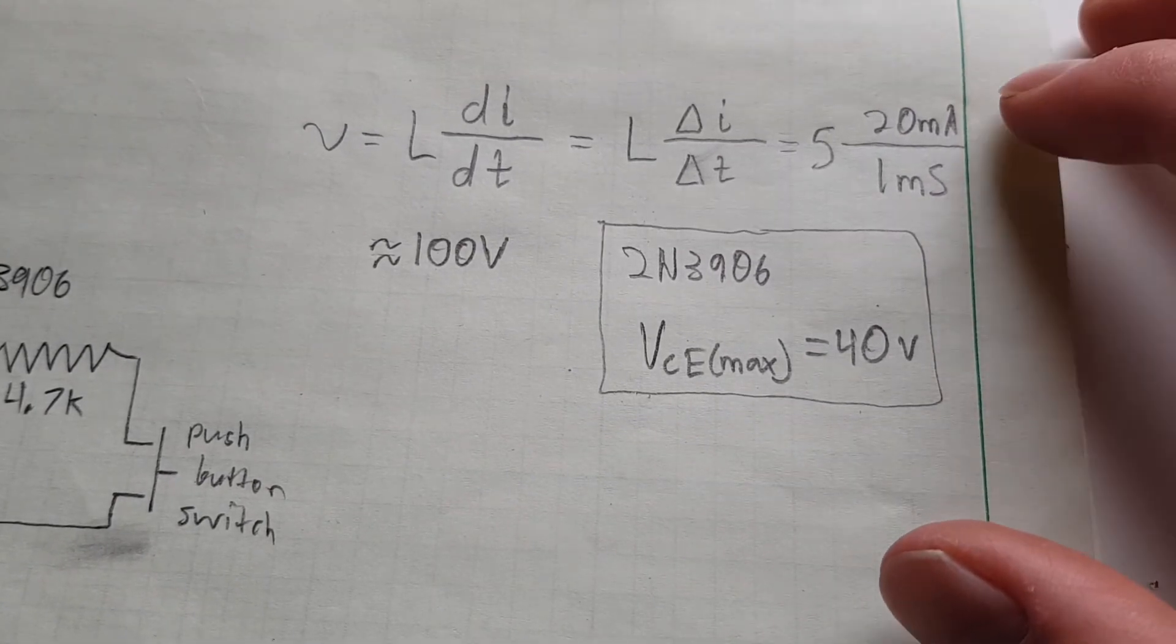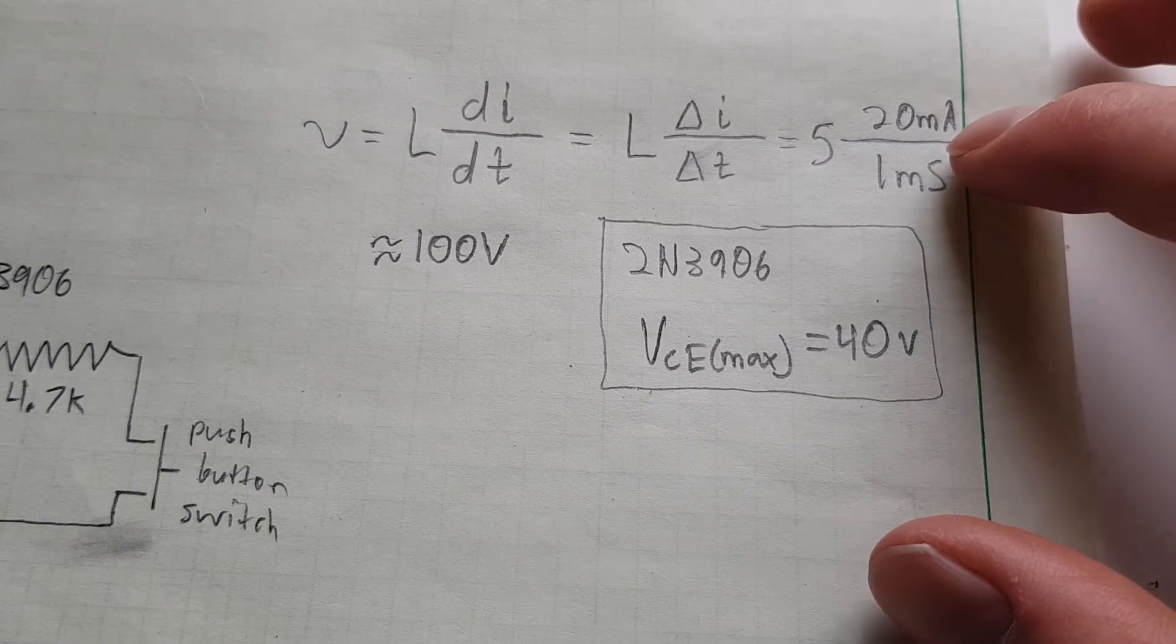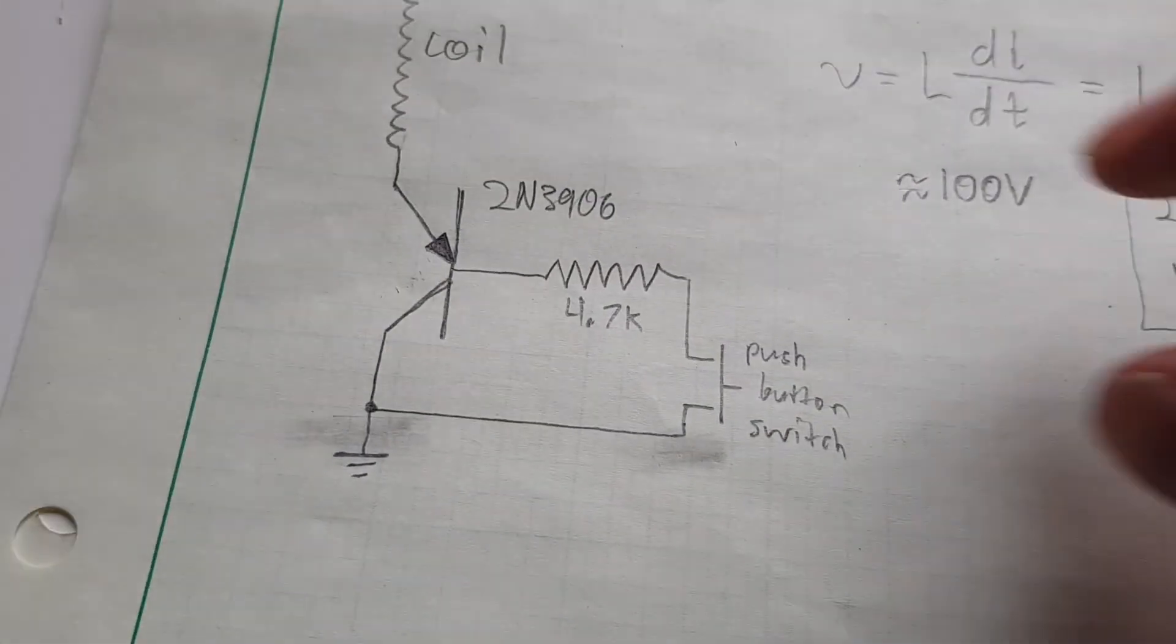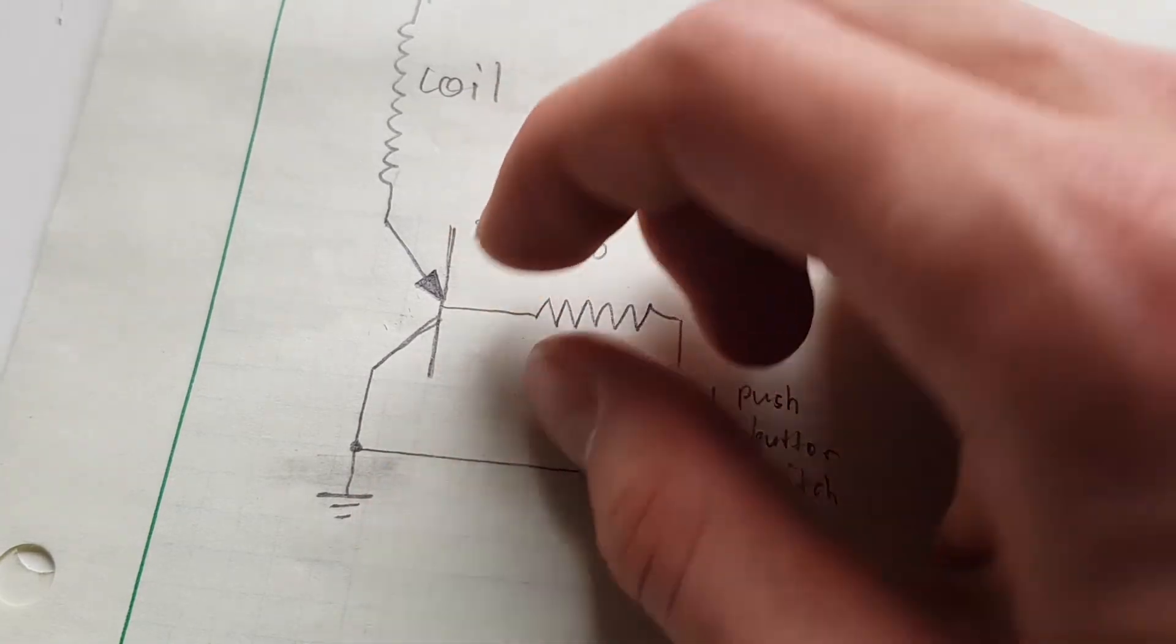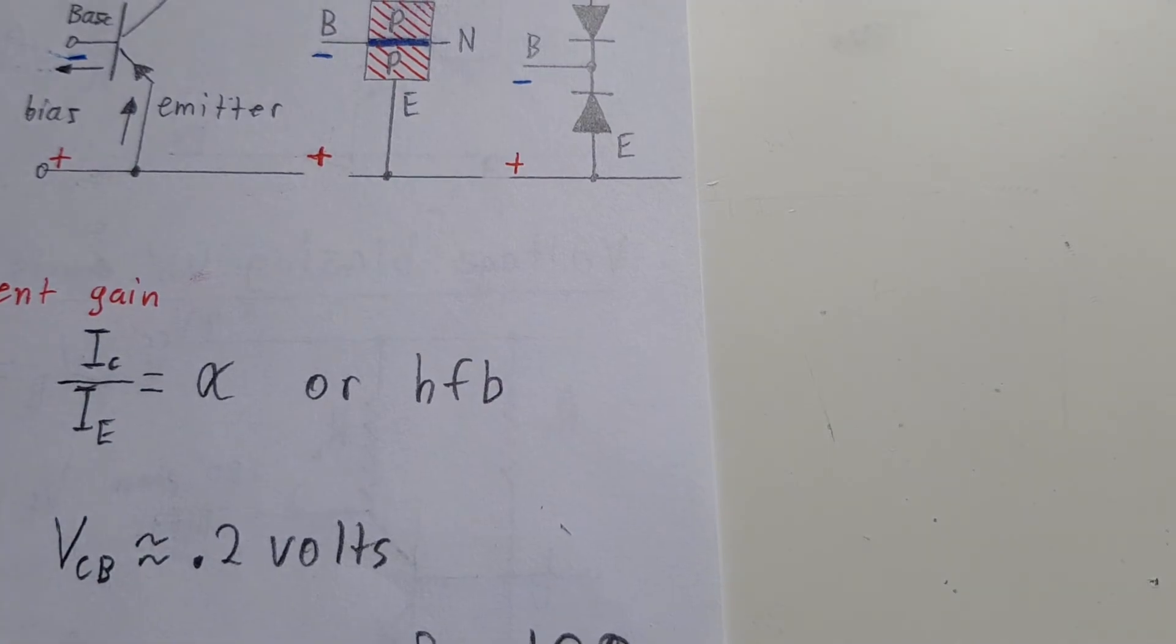Now, the VCE, the voltage of the collector to the emitter maximum is 40 volts. Well, actually it'd be like negative 40 volts, because it's PNP. But basically, you can't have more than 40 volts difference across this thing. Otherwise, you're in danger of puncturing the base region of this transistor.